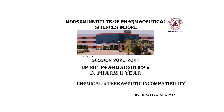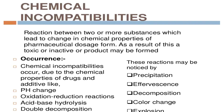First, what is chemical incompatibility? Chemical incompatibility is a reaction between two or more substances which leads to a change in the chemical properties of pharmaceutical doses. As a result of this, a toxic or inactive product may be formed. Chemical incompatibility occurs due to the chemical properties of the drug and additive like pH change, oxidation-reduction reaction, acid-base hydrolysis and double decomposition.